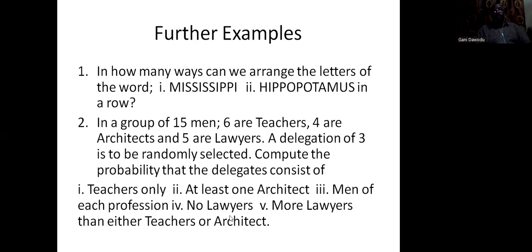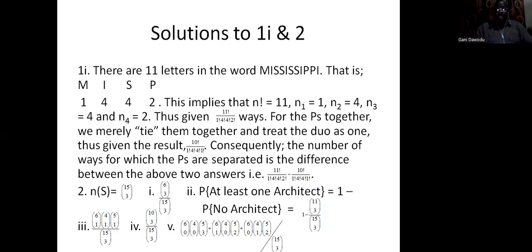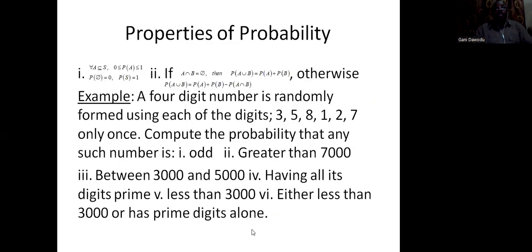No lawyers. When you remove the number of lawyers, then there will be 10 left. So, again, out of those 10, you are choosing 3. So, it's 10 choose 3, divided by 15 choose 3. More lawyers than teachers or architects. And that's the situation on the analysis.